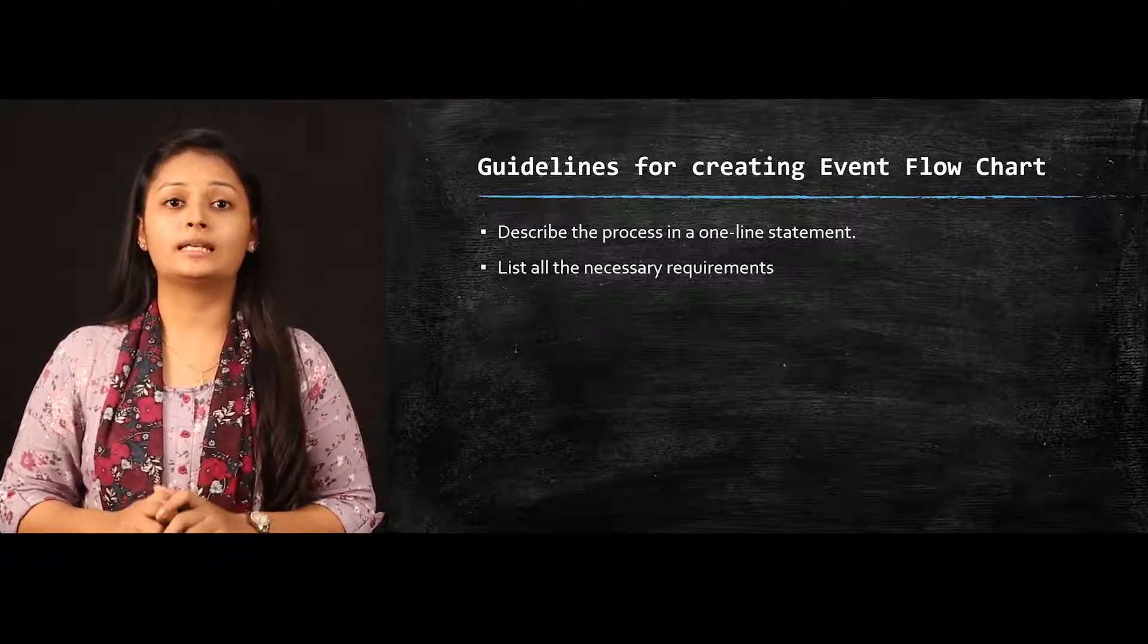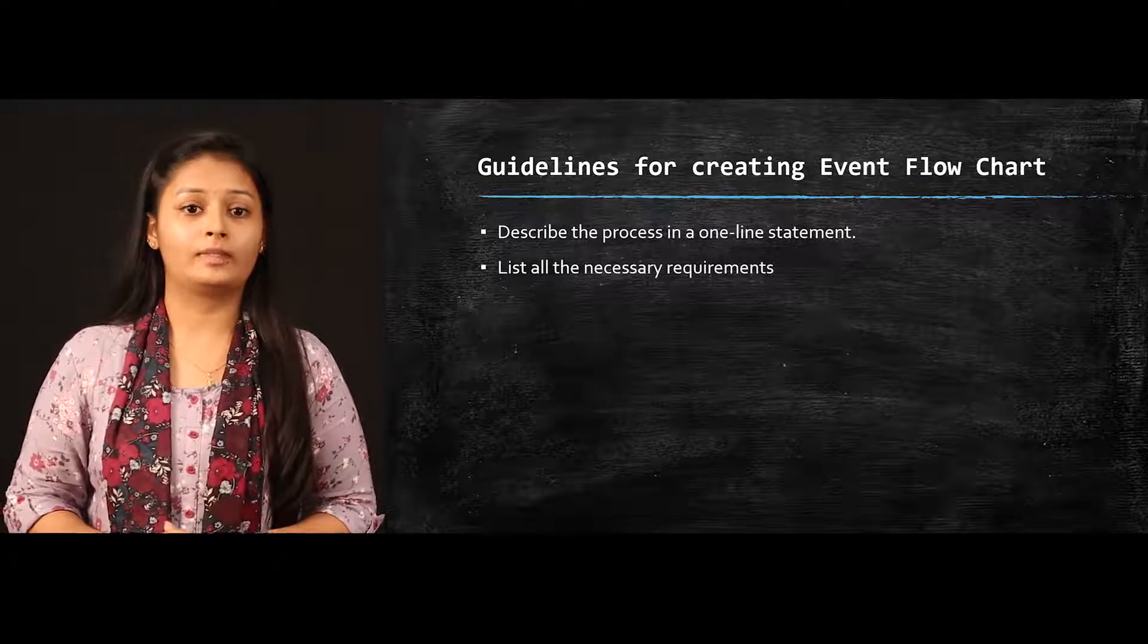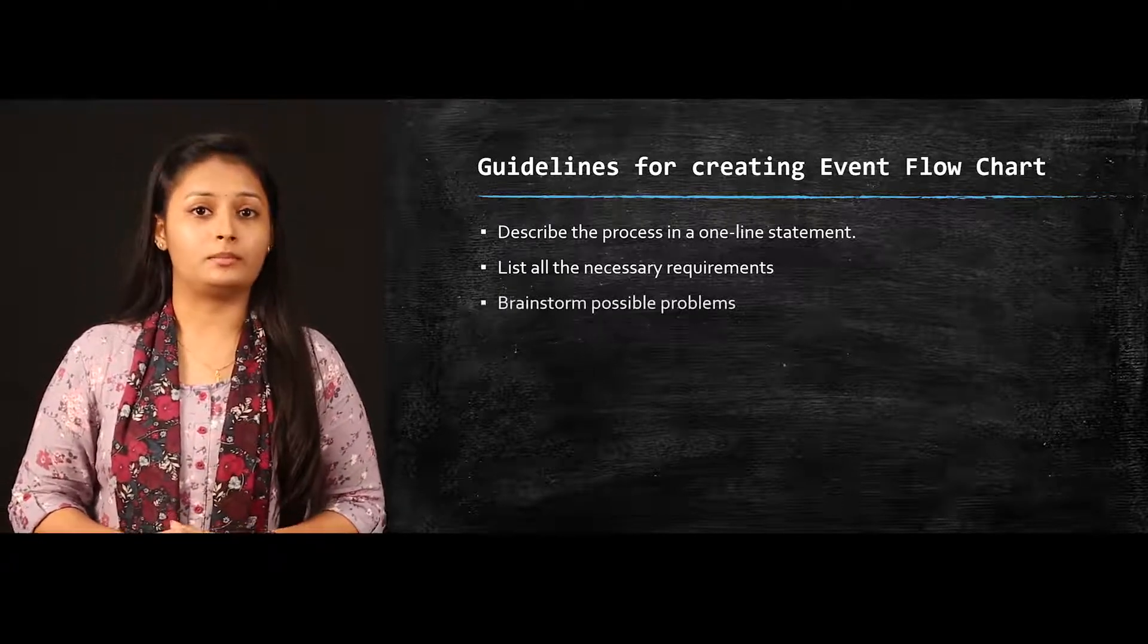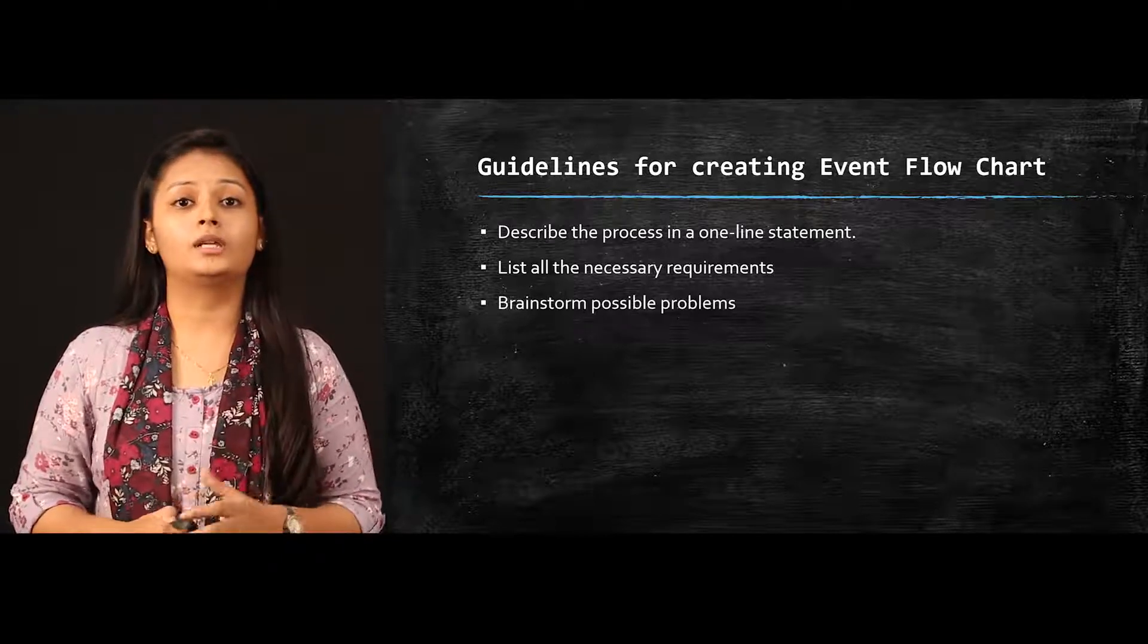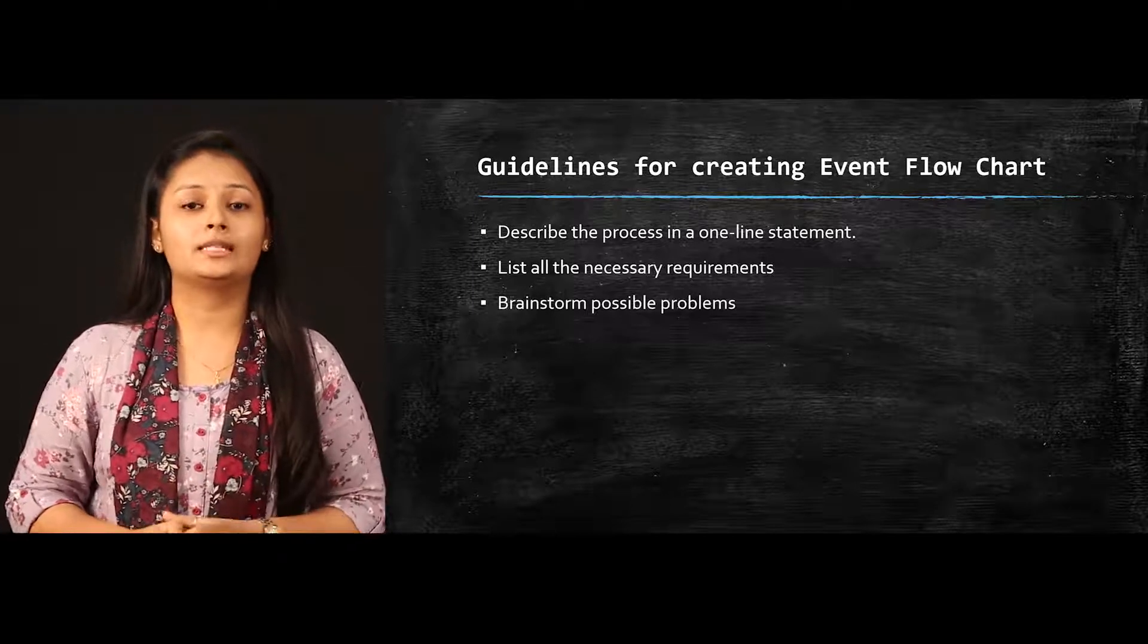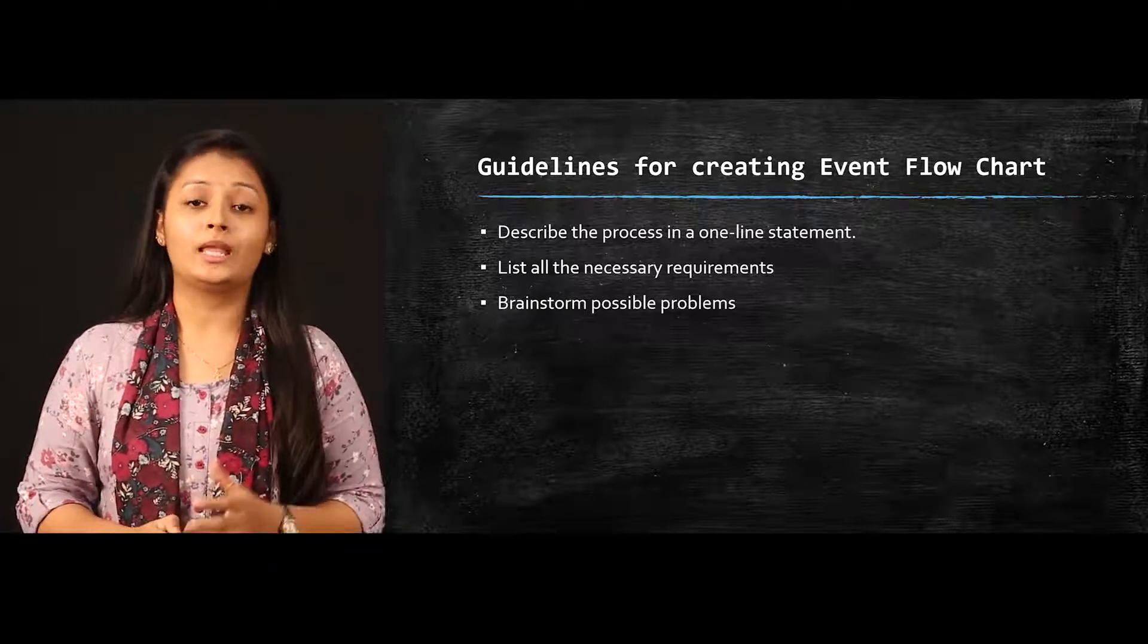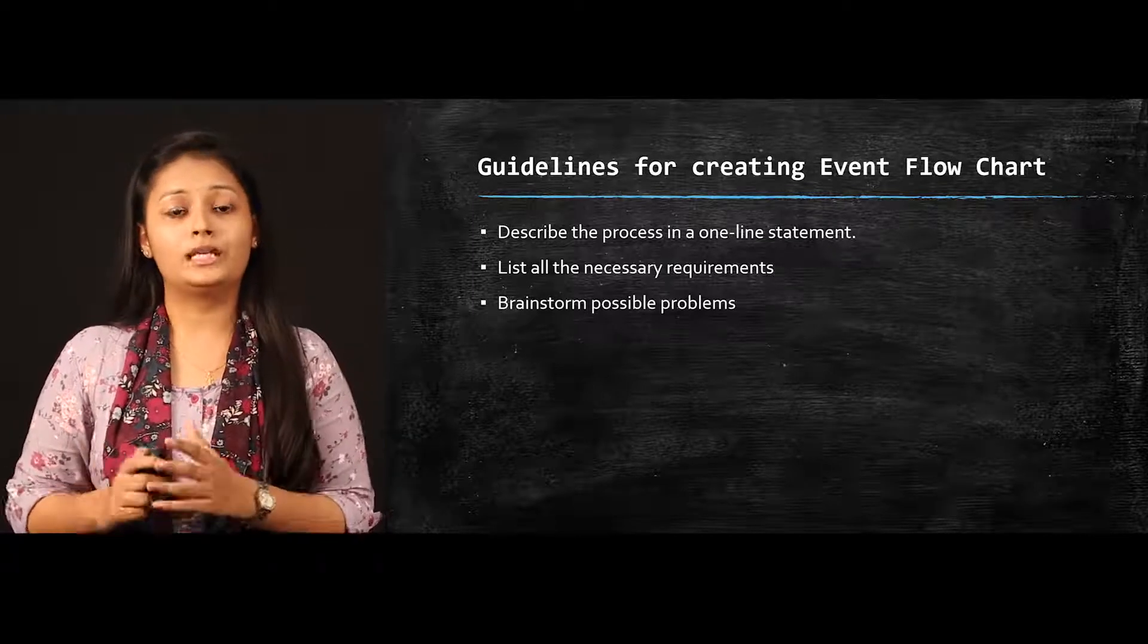Make sure that you don't forget any minute or small activity which is to be performed. Brainstorm all possible problems. It is very important that you brainstorm the possible and unwelcome consequences which may occur in the event along with the contingency plan for such consequences. It is not necessary that you mention those possible problems on your event flowchart, but you need to be ready for them.